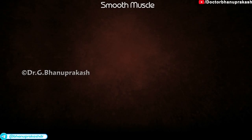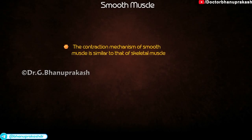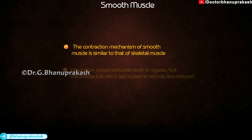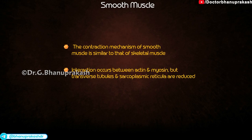Smooth muscle. The contraction mechanism of smooth muscle is similar to that of skeletal muscle in that interaction occurs between actin and myosin. However, the transverse tubules and sarcoplasmic reticula are greatly reduced and troponin is absent.